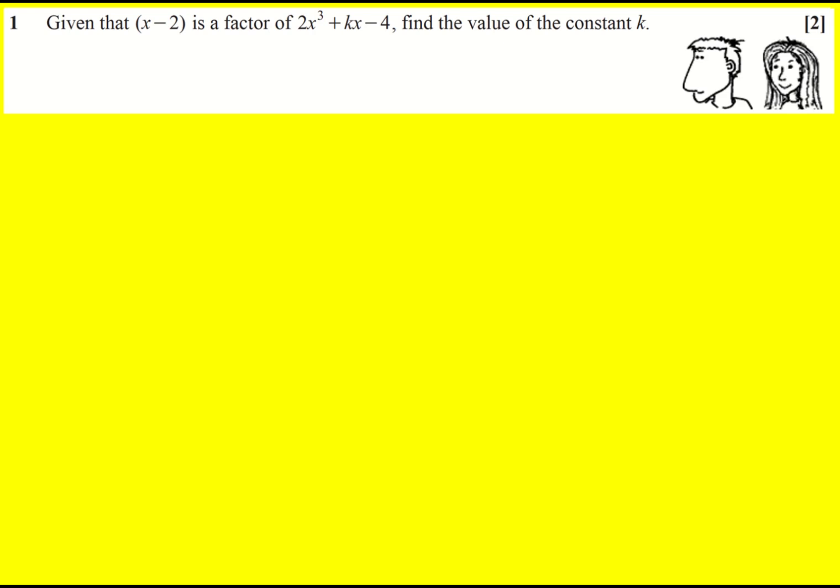Given that x minus 2 is a factor of 2x cubed plus kx minus 4, find the value of the constant k. I'm going to do this in quite some depth. You can do it really quickly. I just want to explain what I'm actually doing.